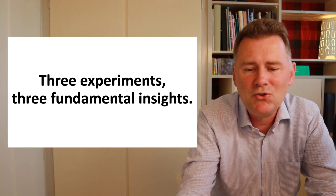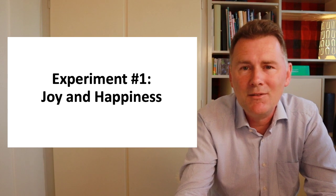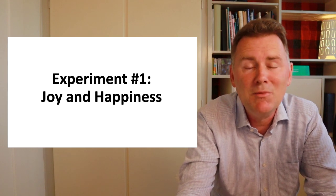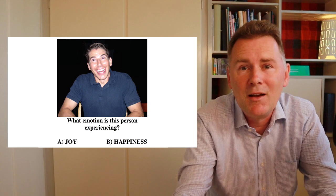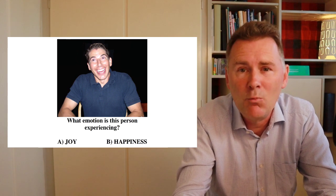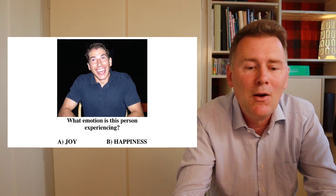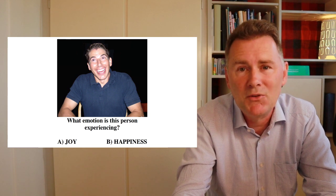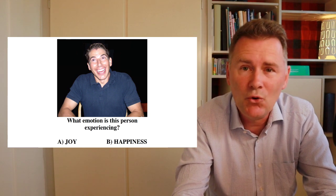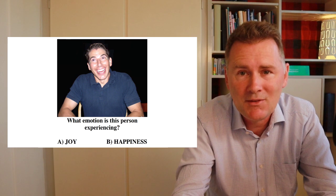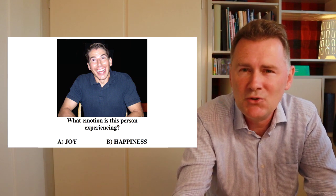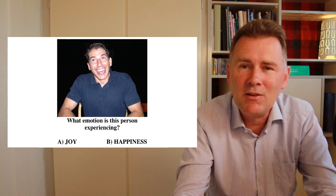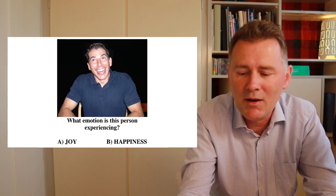Experiment 1 is about joy and happiness. The design of the experiment is extremely simple. The participants were shown a picture of a person, and all they had to do was answer one simple question: what emotion is this person experiencing? Is it joy or is it happiness? Now, joy and happiness are two very similar emotions, but in English we talk about them in different ways.